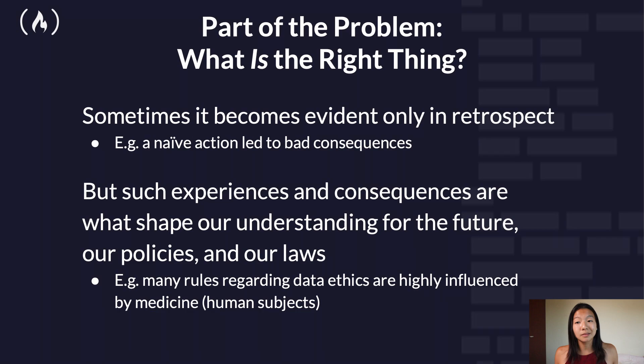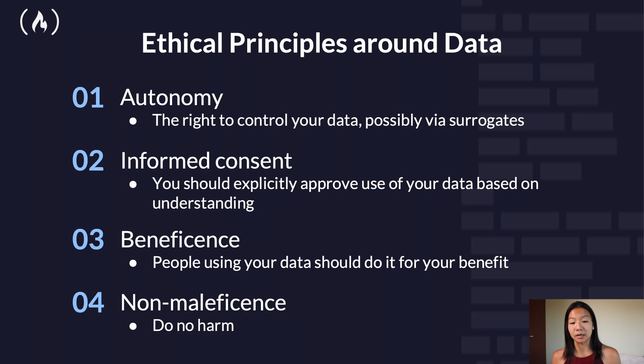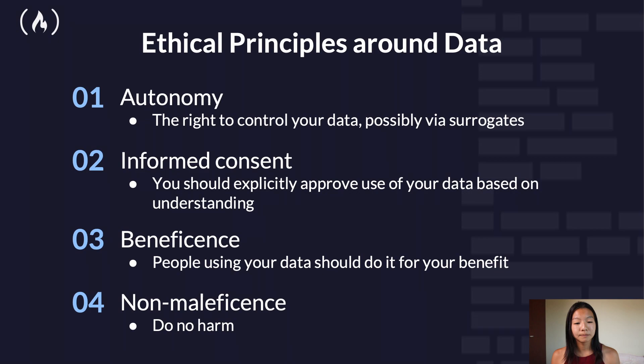Laws are often created to enforce these social values. For example, when spam mail first arose, it might have seemed like a good idea. But after some time, it became clear that it was not, and laws have been put into place to govern it. So let's talk about the ethical principles around data. It really falls into four different categories: autonomy — the right to control your data possibly via surrogates; informed consent — where you should explicitly approve of your use of data based on your understanding of what it's going to be used for; beneficence — people should be using your data for your benefit; and non-maleficence — which means do no harm.